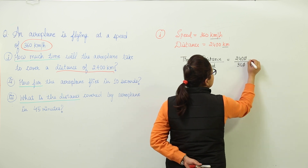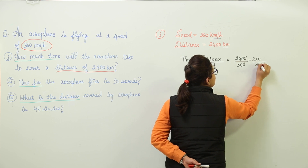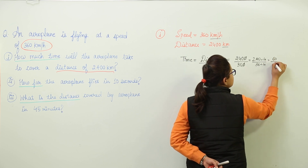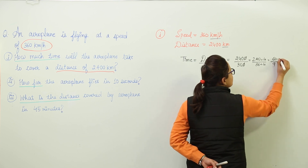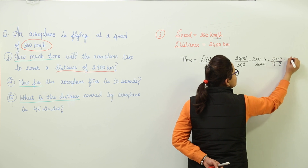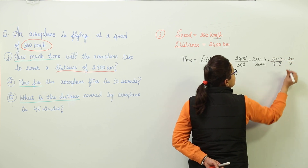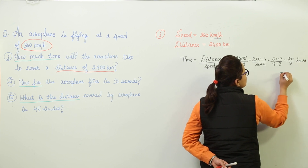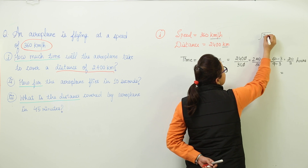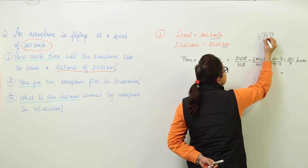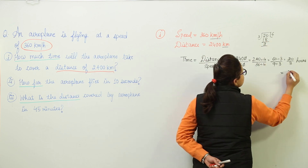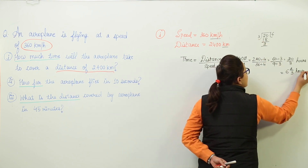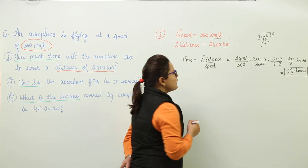Cutting the zeros, we get 240 over 36. Simplifying with 4 gives 60 over 9, and further dividing by 3 gives 20 over 3 hours. We can leave it as 20/3 hours, or convert to a mixed fraction by dividing 20 by 3: we get 6 remainder 2, which gives 6 and 2/3 hours as the time taken by the aeroplane to travel 2400 kilometers.